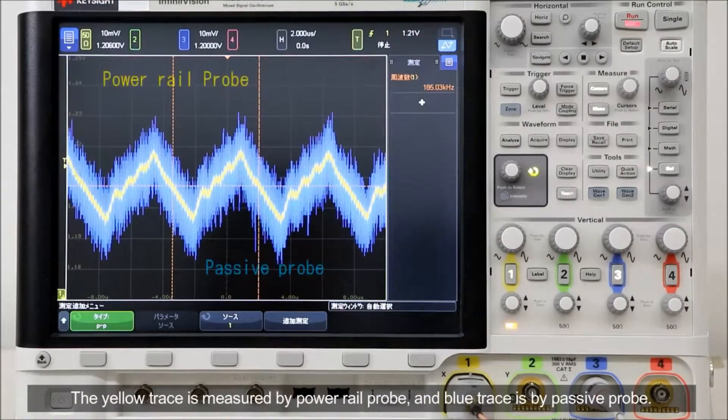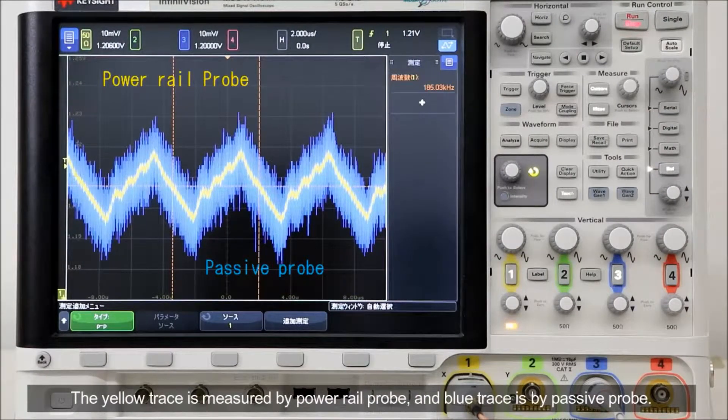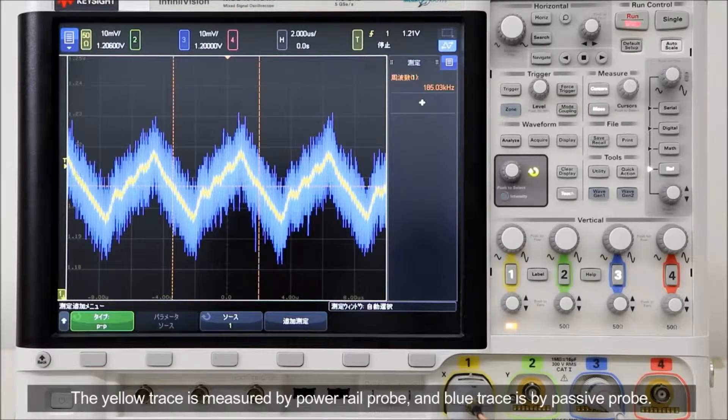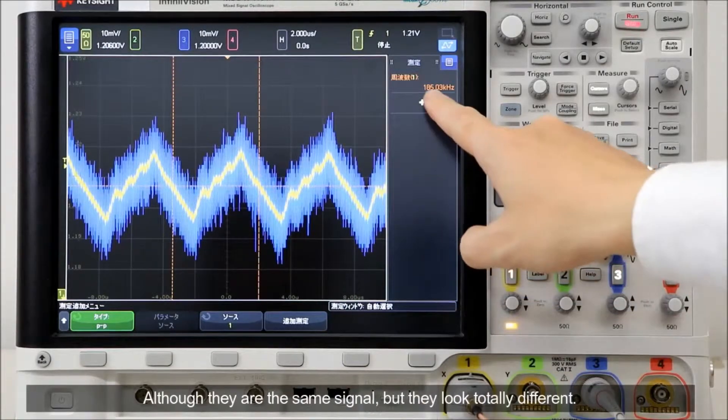The yellow trace is measured by PowerRail probe and the blue trace is by passive probe. Although they are the same signal, they look totally different.